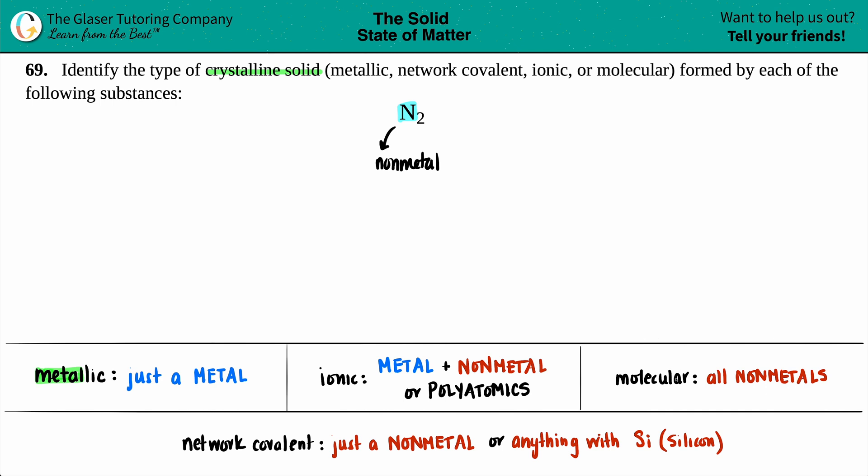Molecular crystalline solids are coming from the molecule. And remember, molecules or molecular always comes from covalent compounds. And covalent compounds are always about the nonmetals. In this case, I have nitrogen. It's a nonmetal, so it could be molecular.